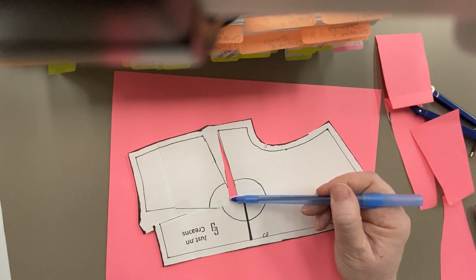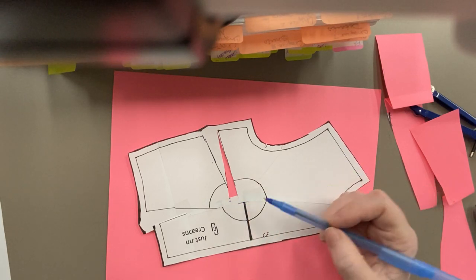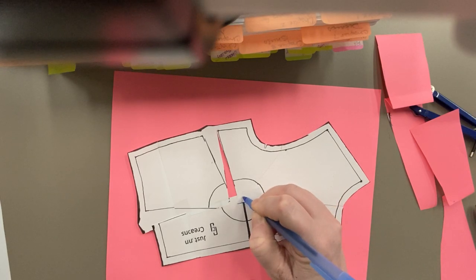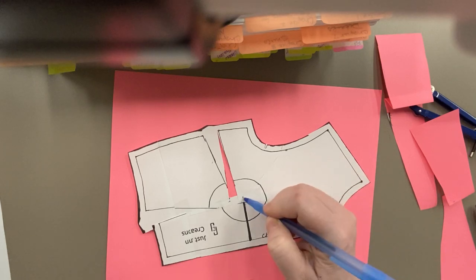I'm going to bring this dart tip half the distance. Make a new one. Same with my bust point. My bust point was here. I need it to be dead center. So I'm going to bring it half the distance. Draw a new bust point.